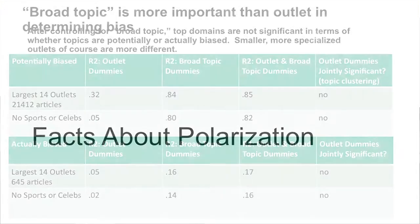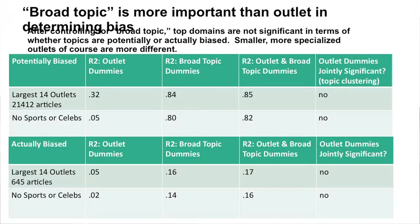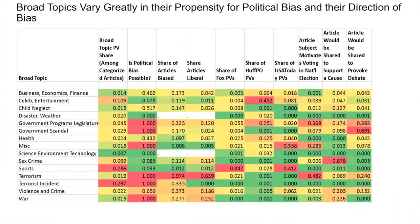A few more facts about polarization: the topic is a lot more important than the outlet in terms of determining bias. In a regression of whether the article is potentially biased or not, using a sample of about 20,000 articles from the largest 14 outlets, we find that outlet dummies are not jointly significant. You get almost all the action out of the topic dummies. This is just for the largest outlets — if you go down to the mid and tail of outlets, there are certainly some outlets that are very predictive of being polarized. But to cover the mass of things, it's really that different outlets cover different topics, and that's a big part of what drives political polarization.